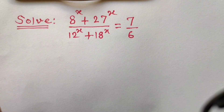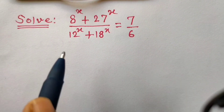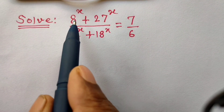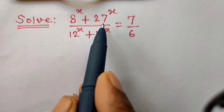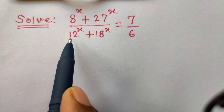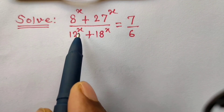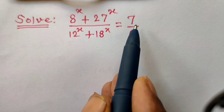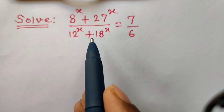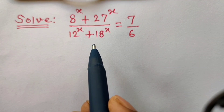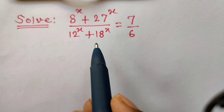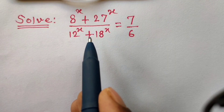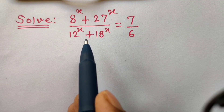Hello friends, welcome to today's session. Today we have to solve this sum: 8 to the power x plus 27 to the power x, divided by 12 to the power x plus 18 to the power x, is equal to 7 upon 6. This is a complicated sum, but if we use some tricks then it becomes simple to solve.